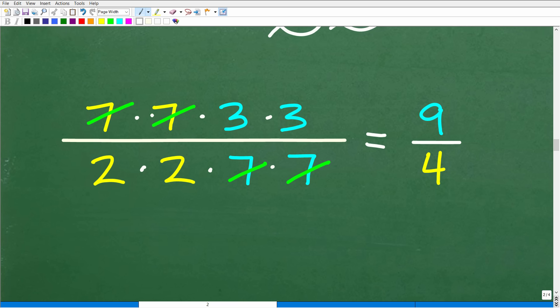Let's go ahead and take a look at the actual answer. After cross-canceling these 7s, I'm left with 3 times 3, which of course is 9, and 2 times 2, which of course is 4, which is our final answer.